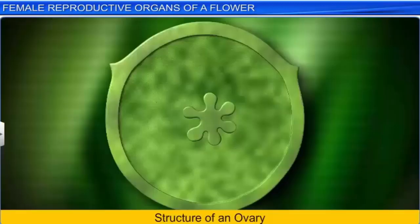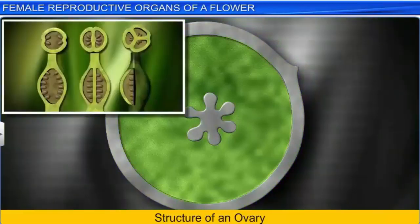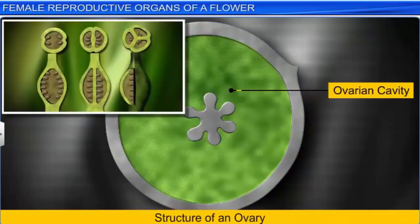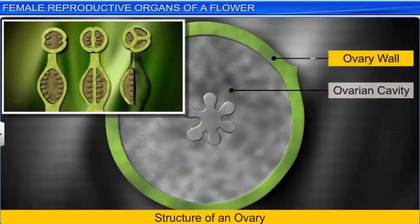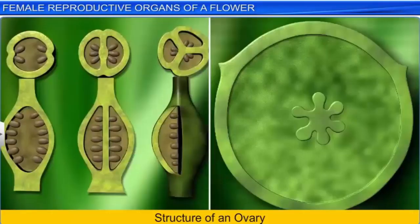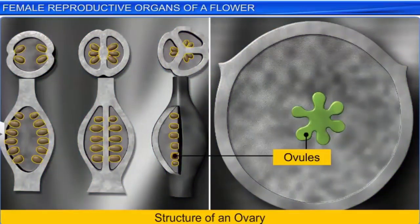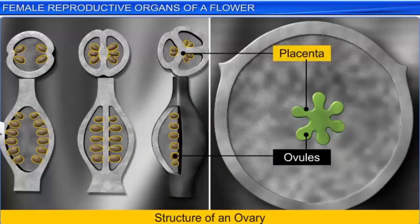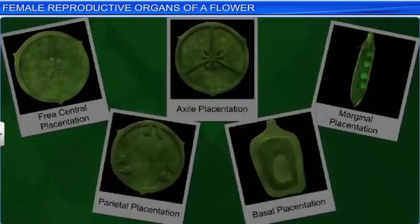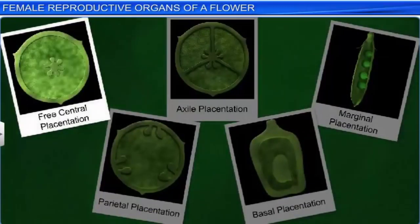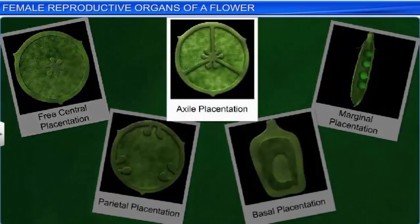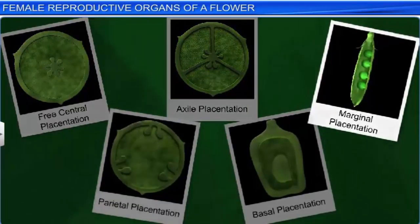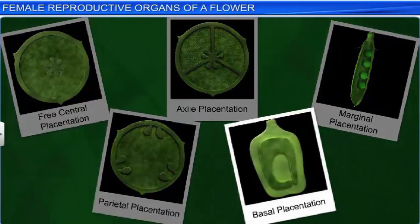Morphological studies of the ovary have revealed that it contains one or more cavities called locules or ovarian cavities, that are surrounded by an ovary wall. Within the locule, you will find ovules or megasporangia, that are attached to the ovary wall in a region called the placenta. These ovules may be arranged in free central, axile, marginal, parietal, or basal placentation.